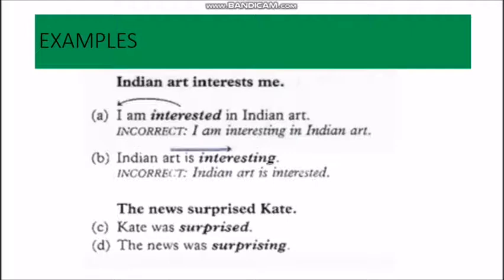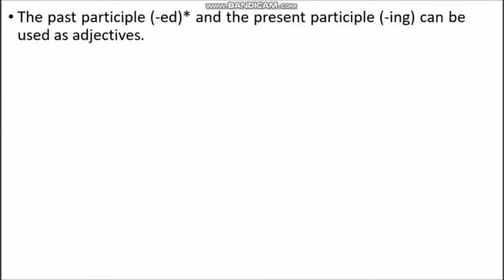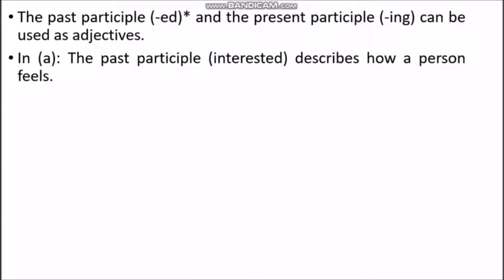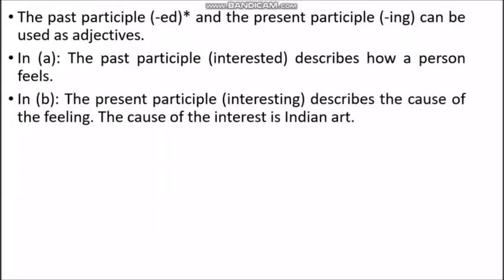To explain that the news surprised Kate, we can say 'Kate was surprised' or 'the news was surprising.' The rule is: the past participle -ed and the present participle -ing can both be used as adjectives. In example A, the past participle 'interested' describes how a person feels. In example B, the present participle 'interesting' describes the cause of the feeling — the cause of being interested is Indian art.